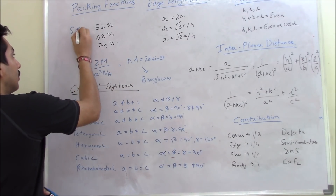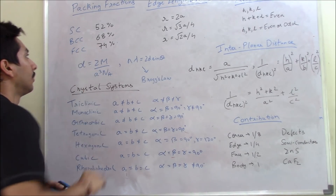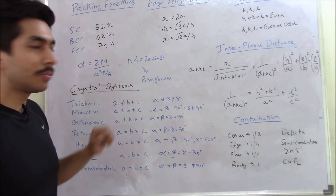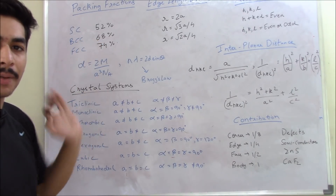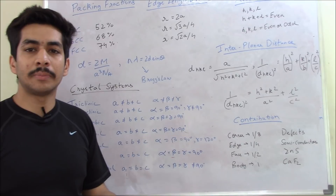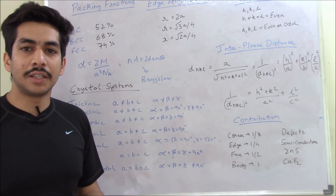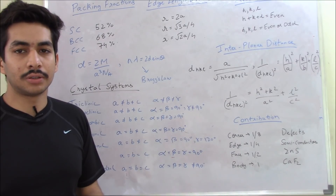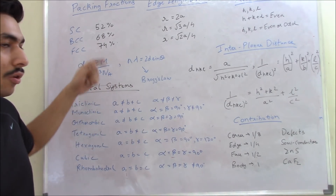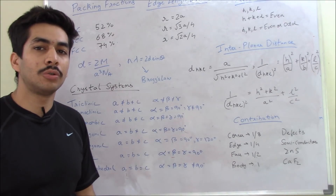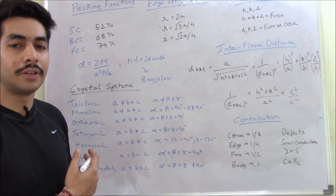This is your simple cubic, this is your BCC and this is your FCC. In packing fractions, simple cubic is 52%, BCC is 68% and FCC is 74%. Sometimes a simple question can be asked: what is the packing fraction of a face-centered system? They can give you some molecule and ask what is the packing fraction of that particular molecule. If you know that molecule is face-centered, the correct answer is 74%.